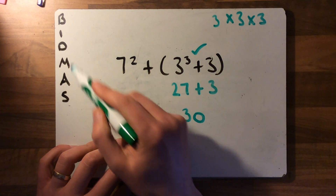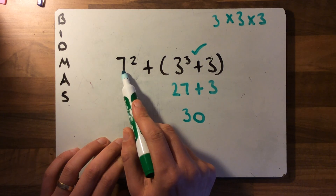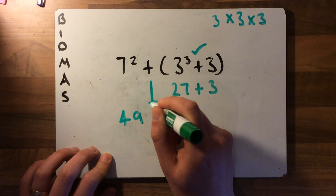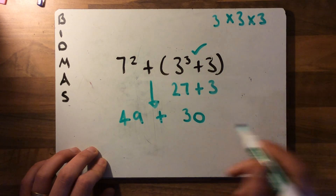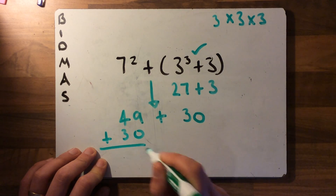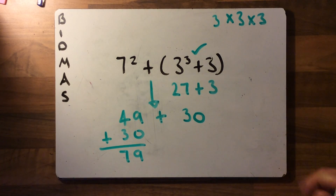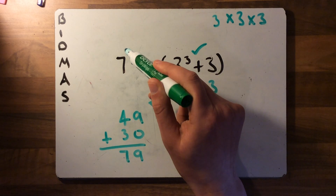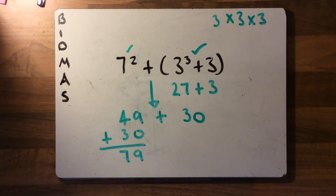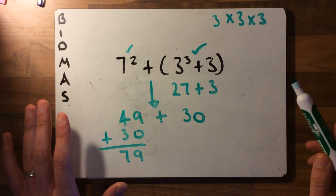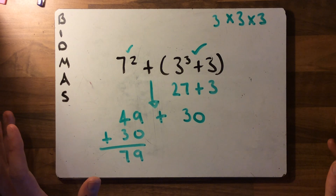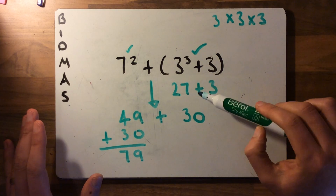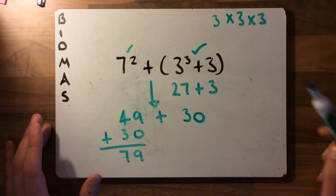The brackets give us 30. Now we look at the remaining expression. Indices come before addition, so we solve seven squared next. Seven squared is 49 — not seven times two, but seven times itself. Then we do the addition: 49 add 30. You might be able to do it in your head, but if not, use a method you know. The answer is 79. So we solved the brackets first to get 30, then the indices to get 49, then added them together to get 79.